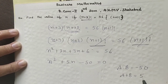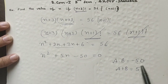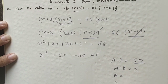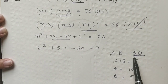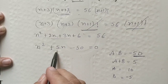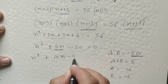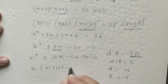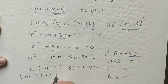Expanding gives n squared plus 5n plus 6 equals 56, so n squared plus 5n minus 50 equals 0. The product needed is minus 50 and the sum is 5. Checking factors: 10 and minus 5 work since 10 into minus 5 equals minus 50 and 10 minus 5 equals 5. Splitting: n squared plus 10n minus 5n minus 50 equals 0, giving n(n plus 10) minus 5(n plus 10) equals 0, so (n minus 5)(n plus 10) equals 0.